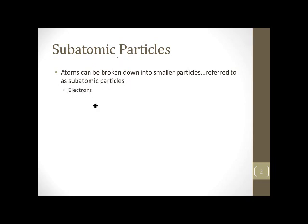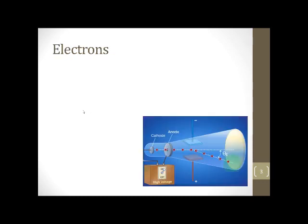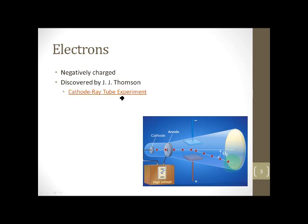These are electrons, protons, and neutrons. But first we're going to take a look at electrons. Electrons are negatively charged and initially they were discovered by this guy, J.J. Thompson, in what's known as his cathode ray tube experiment. So now we're going to take a little look at what that was.